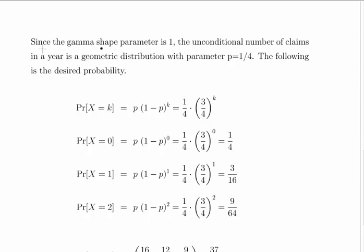Since the gamma shape parameter is 1, the unconditional number of claims in a year is a geometric distribution with parameter p equals 1 over 4. The following is the desired probability, so this is the fundamental formula we're working with.